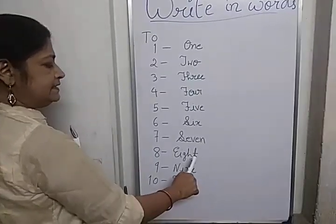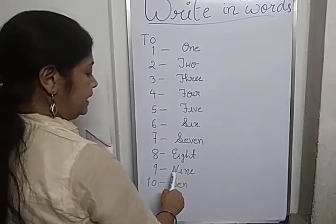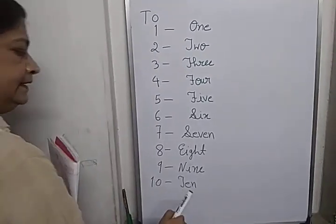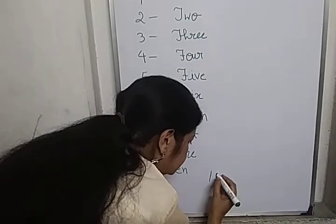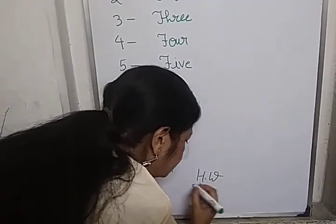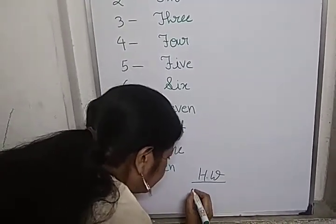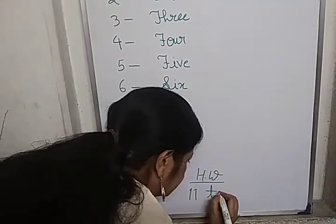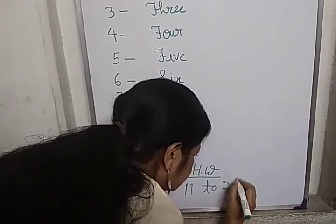E-I-G-H-T, 8. N-I-N-E, 9. T-E-N, 10. Now the next format is 11 to 20.